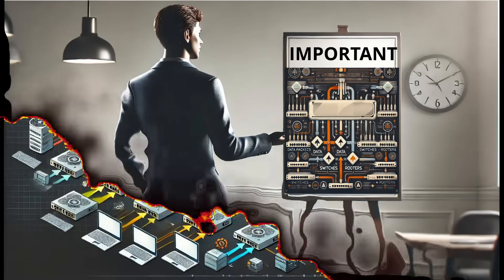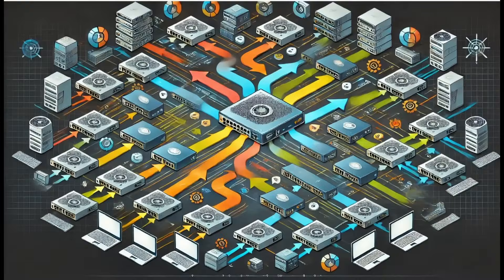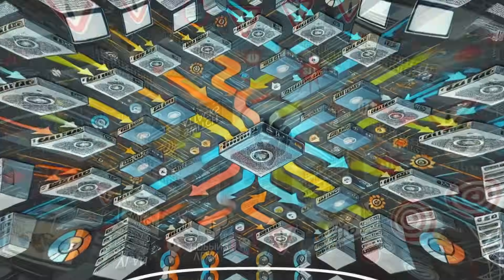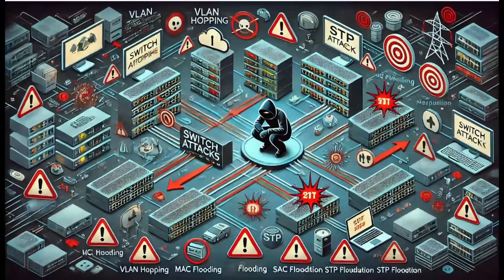It's important for you to know that all network information flows through switches and routers, including such things as authentication information and data. Attackers can use a variety of switch attack methods to gather valuable information that they can use later to exploit the network.